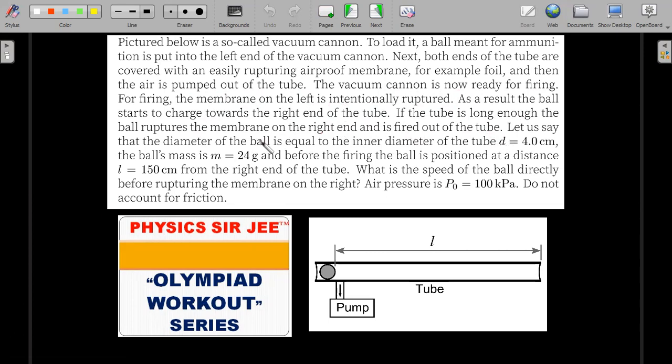Let us say that the diameter of the ball is equal to the inner diameter of the tube, where D is given as four centimeters and the ball's mass is a small 24 gram pellet. And before firing the ball, it is positioned at a distance L equal to 150 centimeters from the right end of the tube.